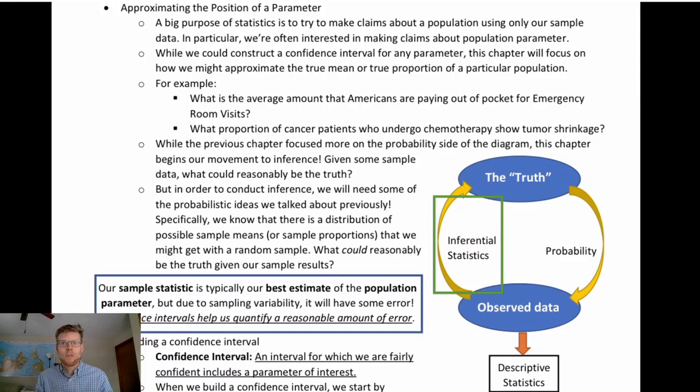We're going to use some of the things we've discussed before. We're going to talk about the distribution of a sample statistic as our big tool for determining where a parameter could reasonably be — using these principles for the purpose of inference.